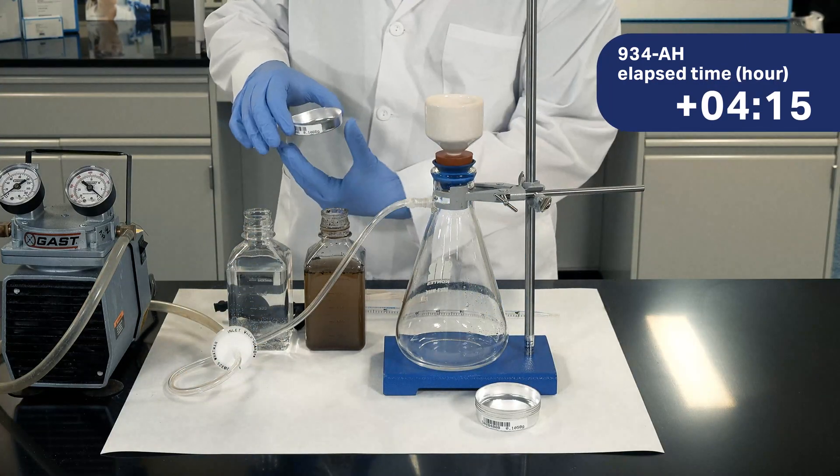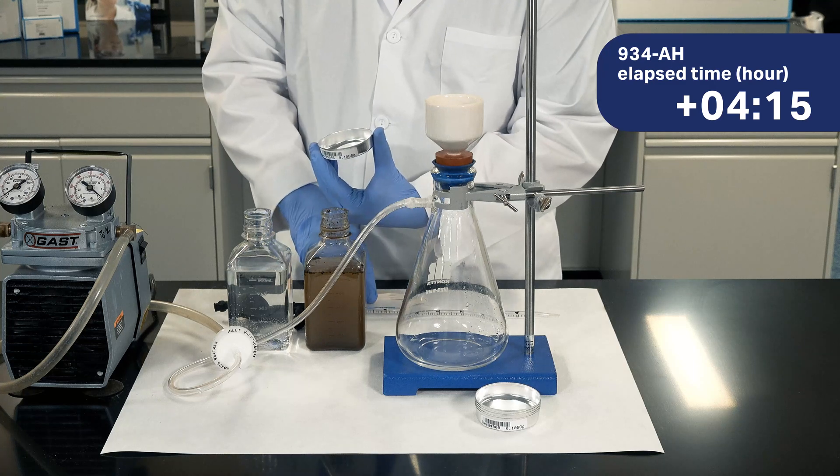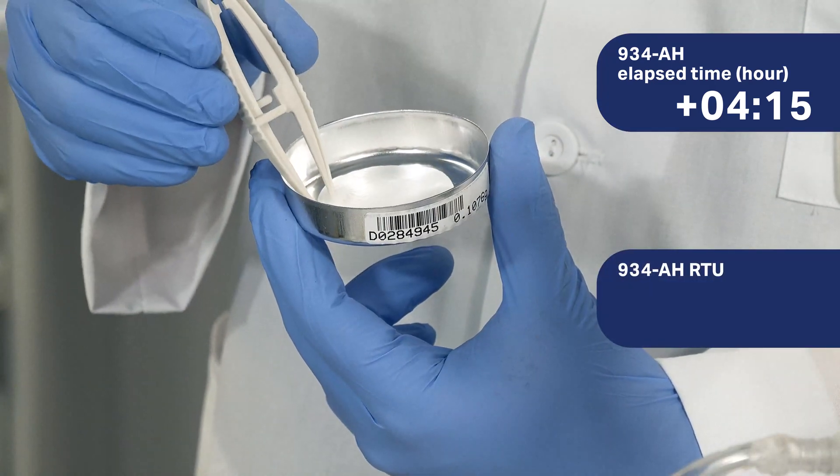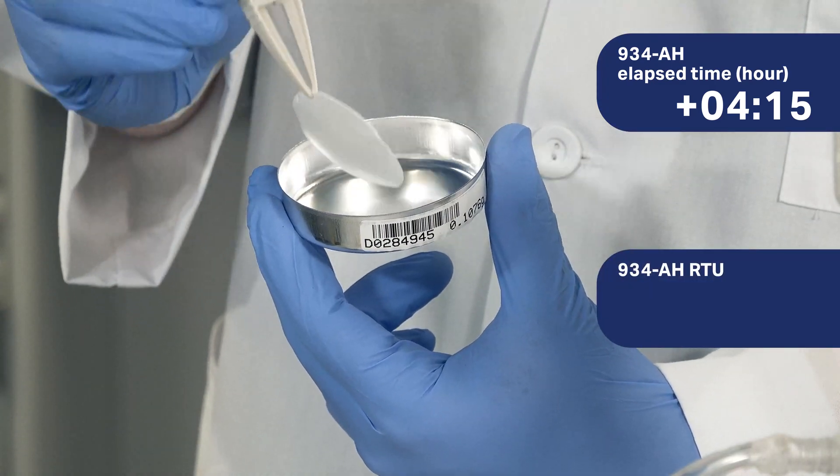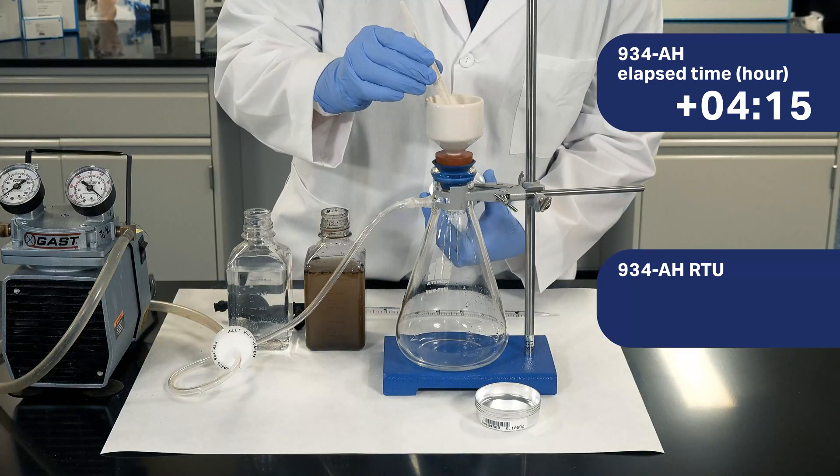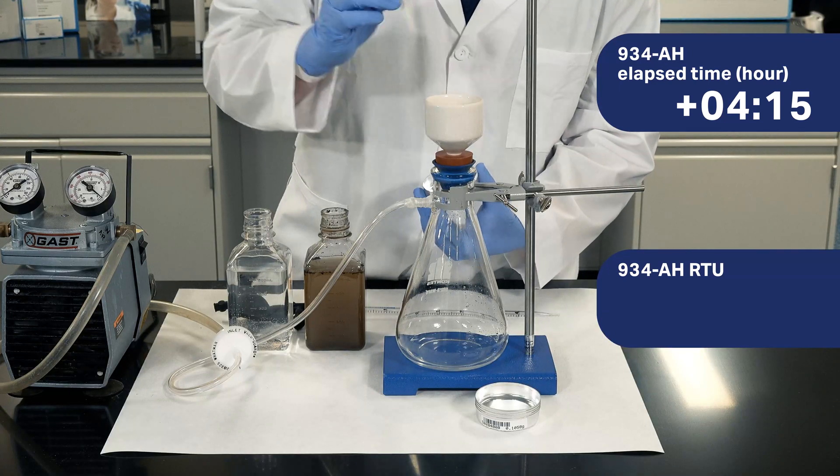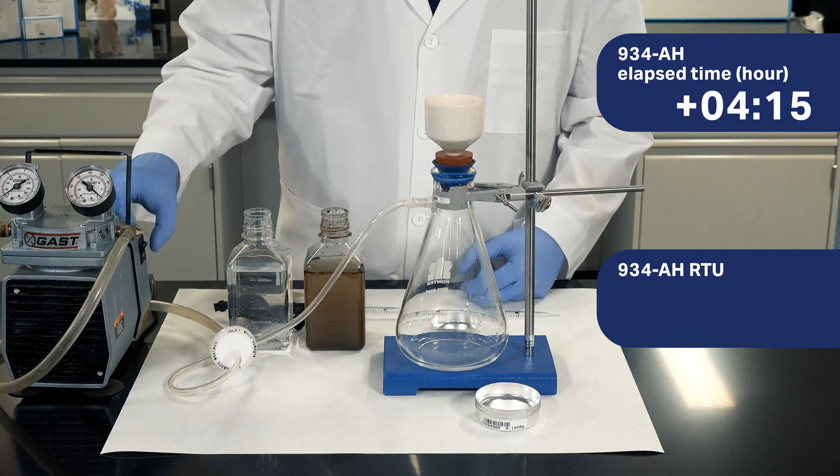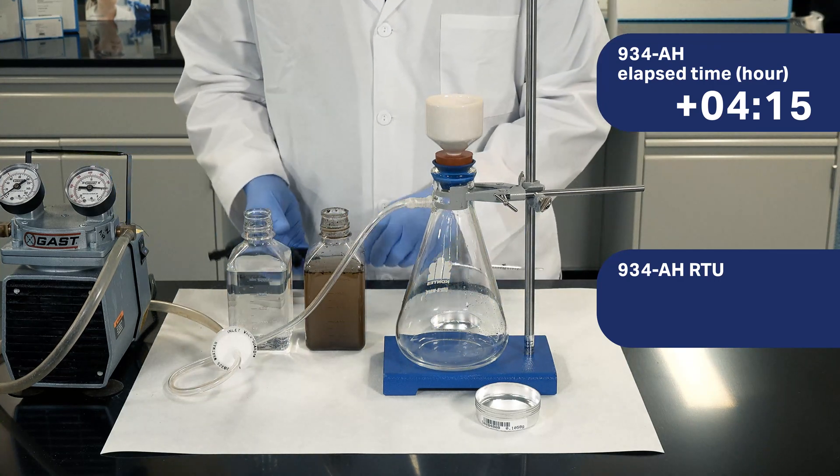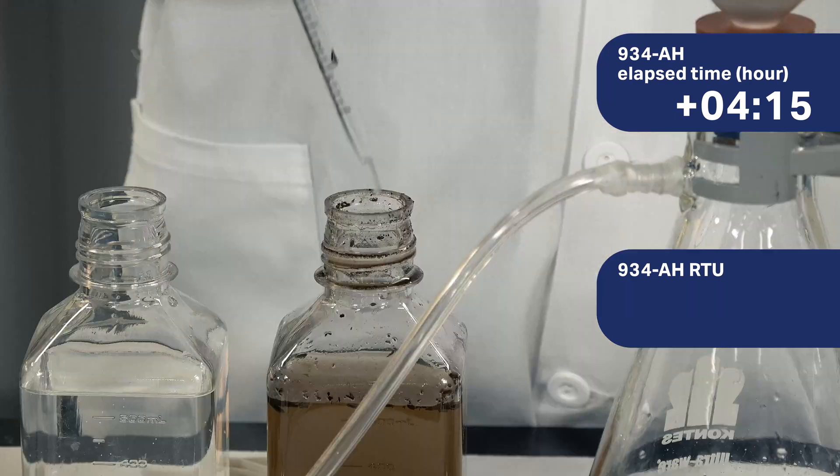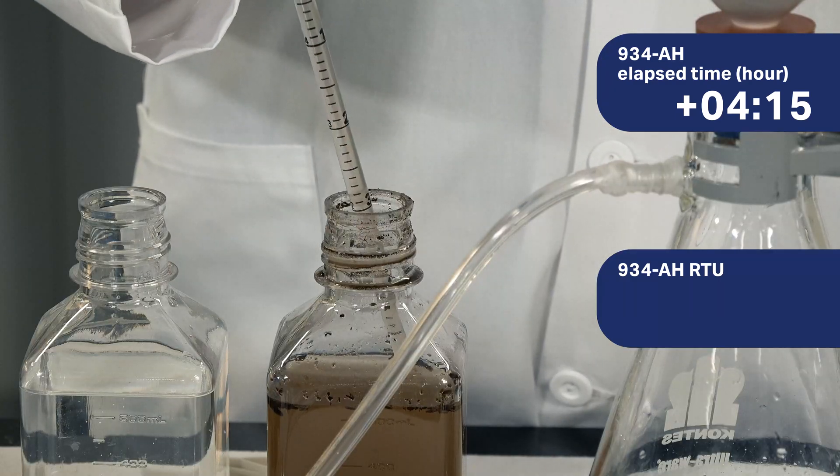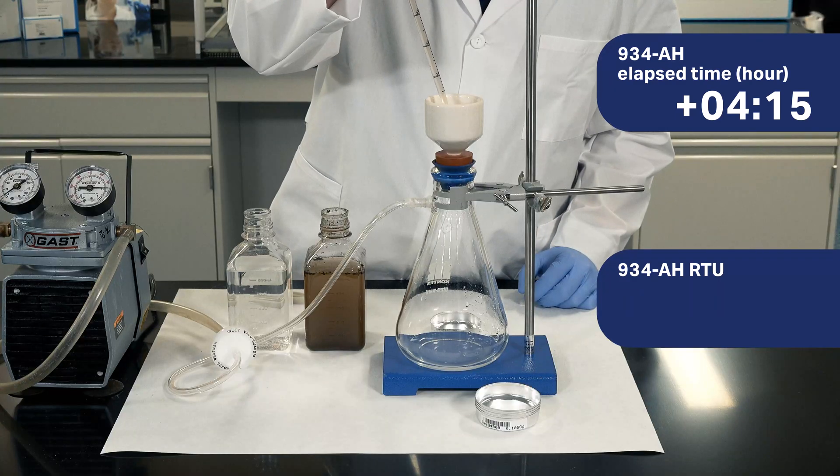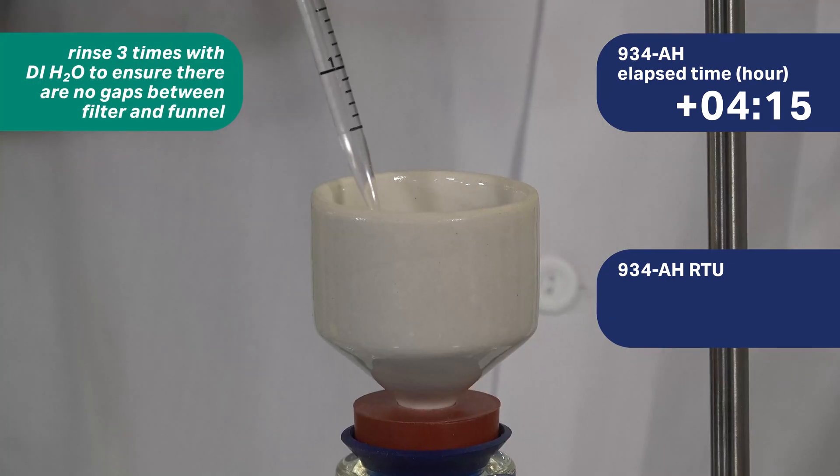At this point, the process continues for the 934AH and begins for the 934AHRTU. Record the mass of the 934AHRTU and seat the filter into the Buchner funnel. Filter a known aliquot of the desired analysis solution. Wash the filter three times.